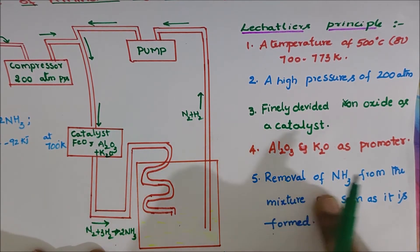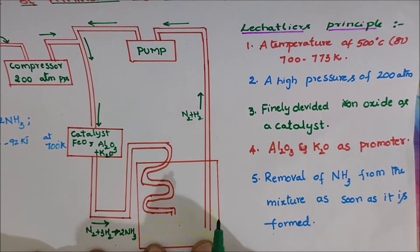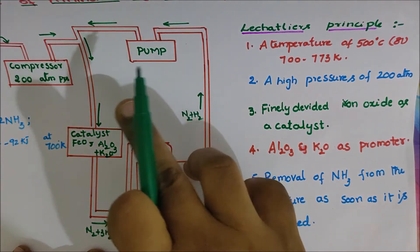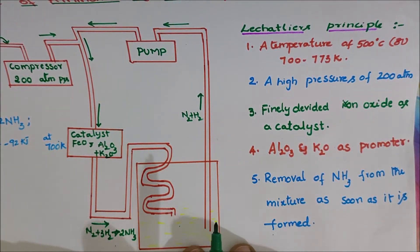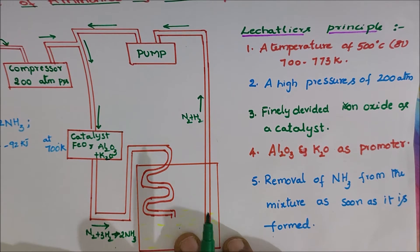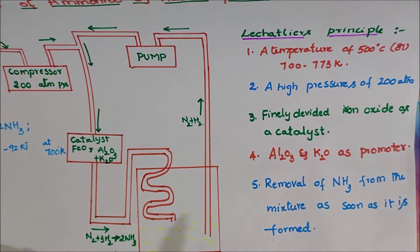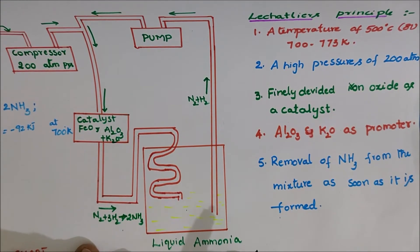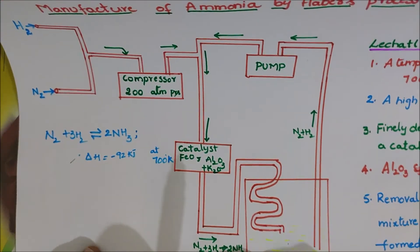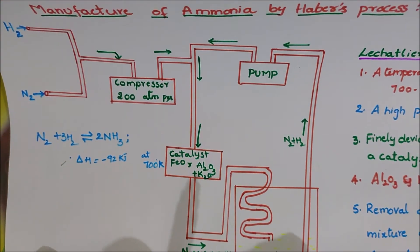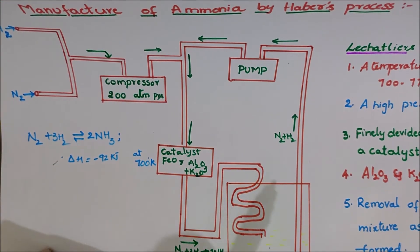By removing ammonia, the equilibrium gets disturbed. The unreacted gases are pumped back to the catalytic chamber again and again, so more liquid ammonia is obtained. This ensures no wastage of chemicals.